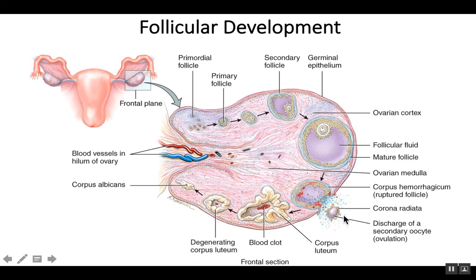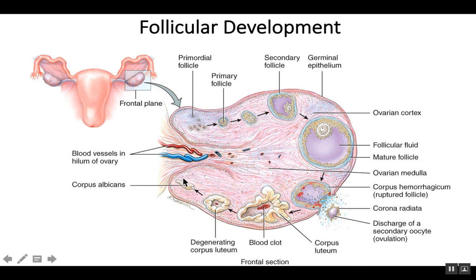Once ovulation occurs, the empty follicle continues to develop into what's known as the corpus luteum — a very important structure after ovulation that continues to produce hormones: estrogen, progesterone, relaxin, and inhibin. This occurs after ovulation until the system determines whether pregnancy has occurred. If fertilization did not occur, the corpus luteum begins to degenerate and eventually becomes the corpus albicans — a non-functional structure that is basically like a little scar and no longer produces large amounts of hormones.